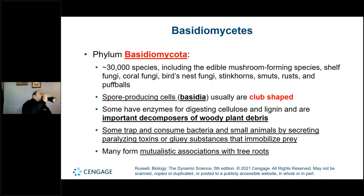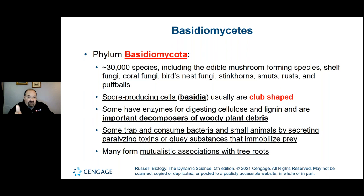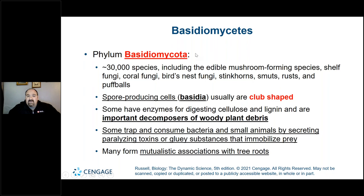Basidiomycetes have approximately 30,000 species — quite a lot. These are what you're thinking of when you think of a fungus — a mushroom. The spore-producing cells are the basidia; they're club-shaped, so these can also be called club fungi. Some have enzymes for digesting cellulose and lignin and are important decomposers of woody plant debris. Some trap and consume bacteria and small animals by secreting paralyzing toxins or gluey substances, then releasing digestive enzymes for extracellular digestion.